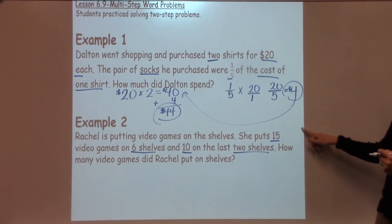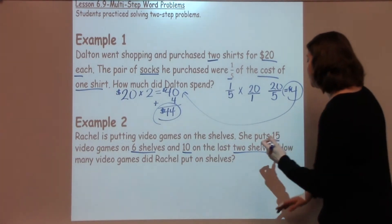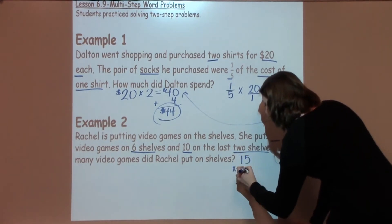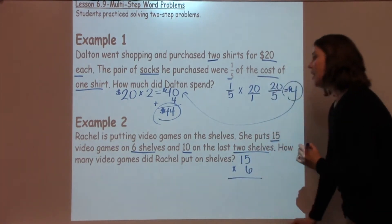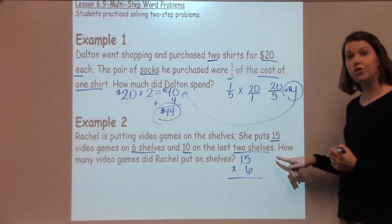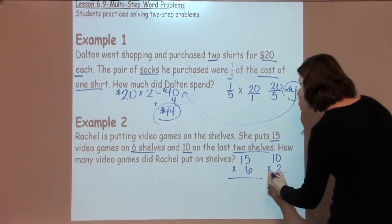When I look at this problem, I know that I've got 15 video games on my 6 shelves. So, I'm going to start off with that first. I'm going to take 15 times 6. Now, I also know from the problem that I've got 10 on the last 2 shelves, so I'm going to write down 10 times my 2 shelves.